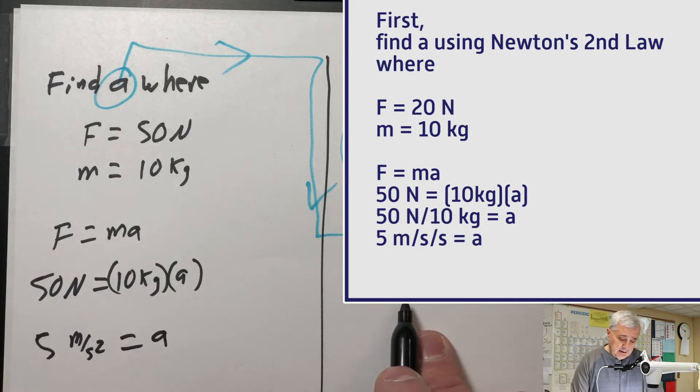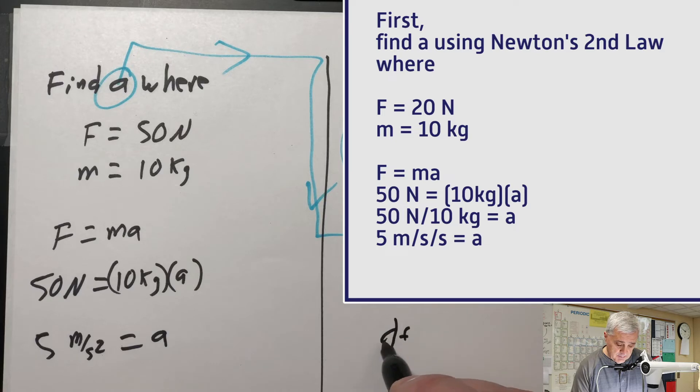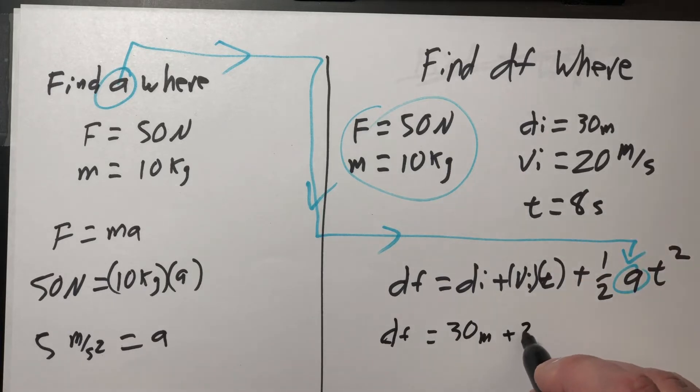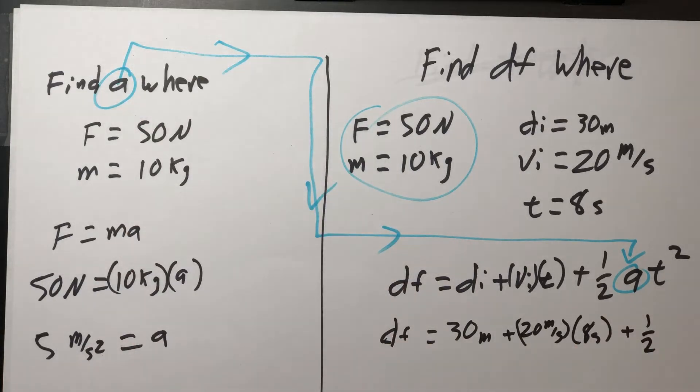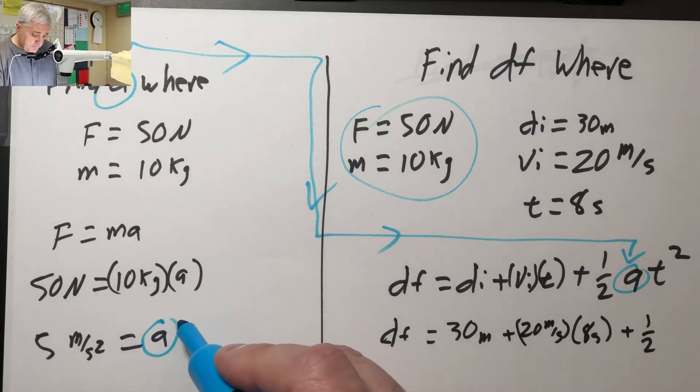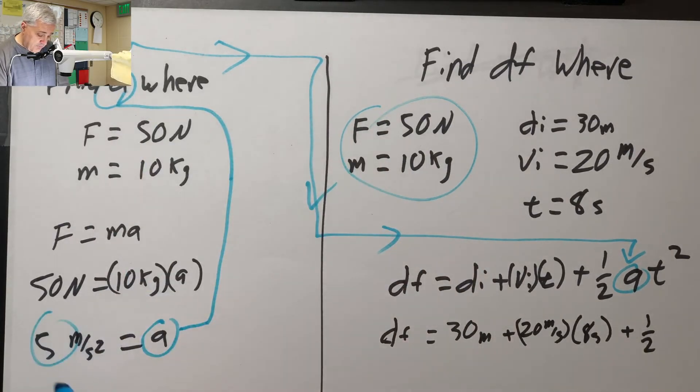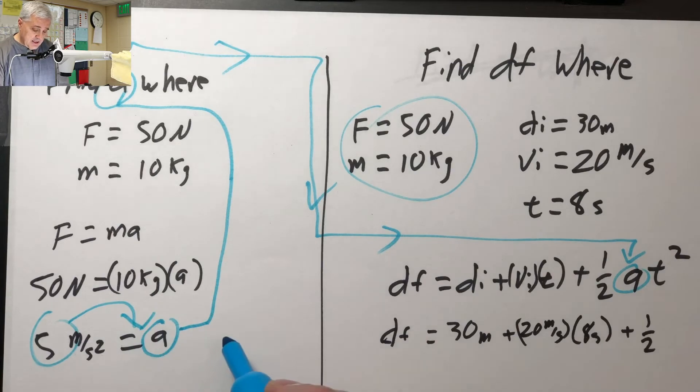So now I'm going to jump in over here. I'm still looking for d sub f. d sub f is the thing I'm looking for. d sub f equals di is 30 meters plus vi is 20 meters per second, t is 8 seconds. So meters over seconds, that's going to cancel out. Plus 1 half. I calculated a, I calculated a over here.